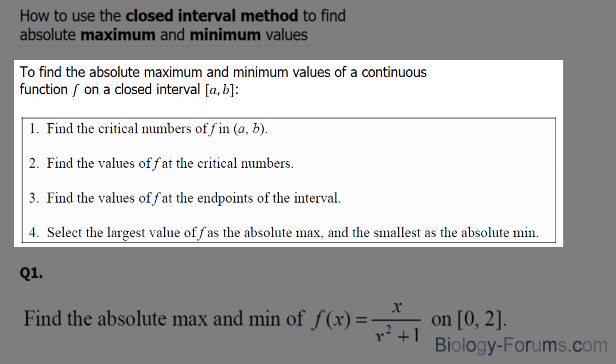You need to find the critical numbers of f in a and b, find the values of f at the critical numbers, find the values of f at the endpoints a and b, and select the largest values of f as the absolute maximum and the smallest as the absolute minimum.